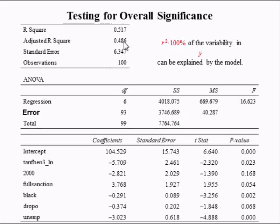The adjusted R-squared is 0.486, so 49% of the variability in the employment population ratio of low-income single mothers can be explained by the model.